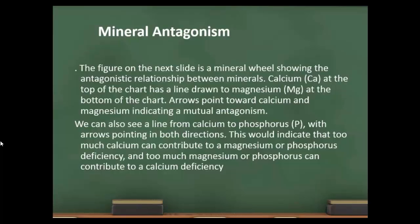...that indicates a mutual antagonism. As it says, arrows point toward calcium and magnesium—I'll show you that in a second—indicating a mutual antagonism. It's probably best if I just show you the chart so you can get an idea.